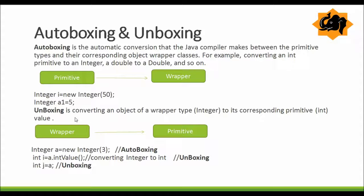Now what is unboxing? Unboxing is converting an object of a wrapper type — for example Integer — to its corresponding primitive value — for example int. So the wrapper type is converted into a primitive type. You can unbox by calling intValue() on the wrapper object, or you can directly assign it to a primitive variable — both approaches are valid for unboxing.